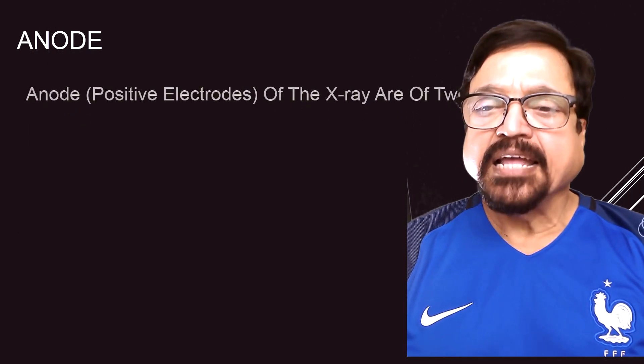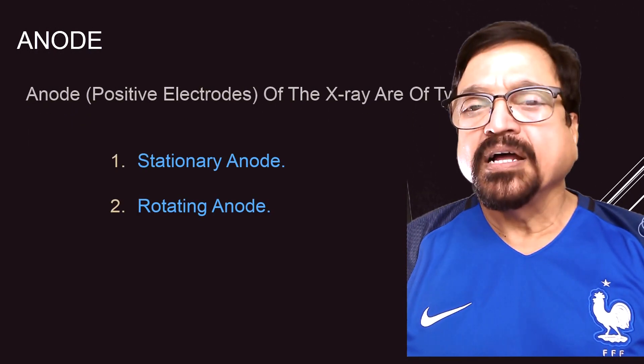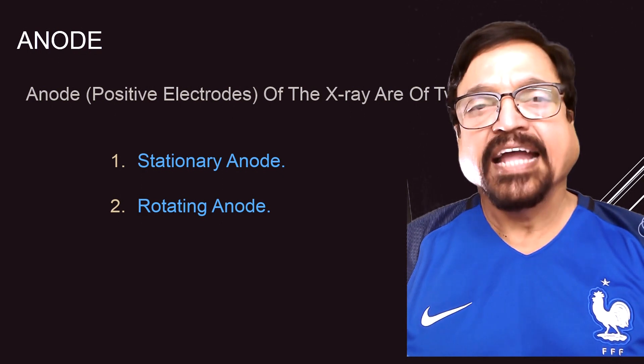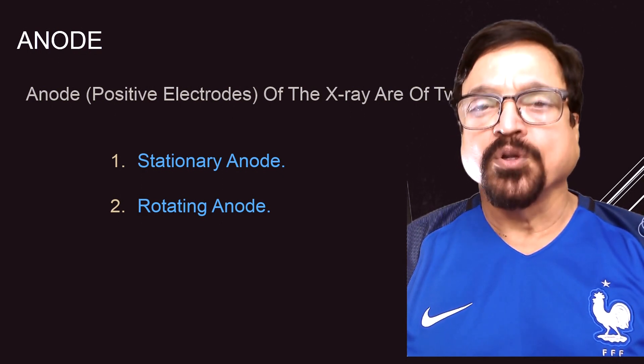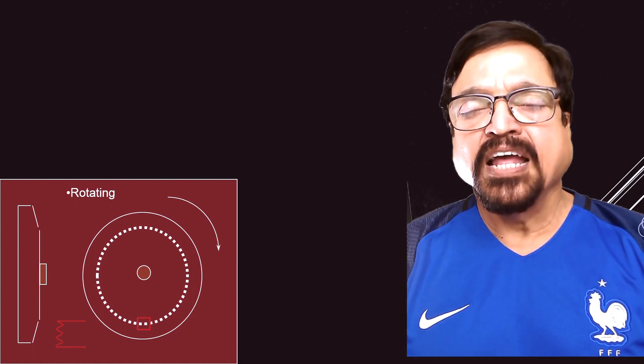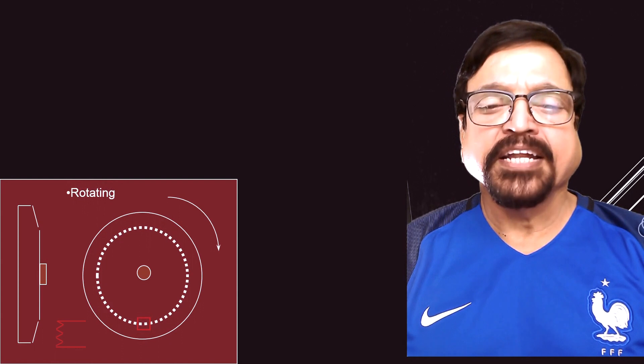Now let's come back to the anode. The anode is positively charged. As far as the anode is concerned, we have either stationary anode or rotating anode tubes. What I am showing you first is a rotating anode — in that the anode rotates at around 3600 revolutions per minute, so it is moving at high speed. It has a focal track of tungsten, and every time a different part of the focal track comes in contact with the electron beam. The advantages of the rotating anode are covered in its dedicated topic.